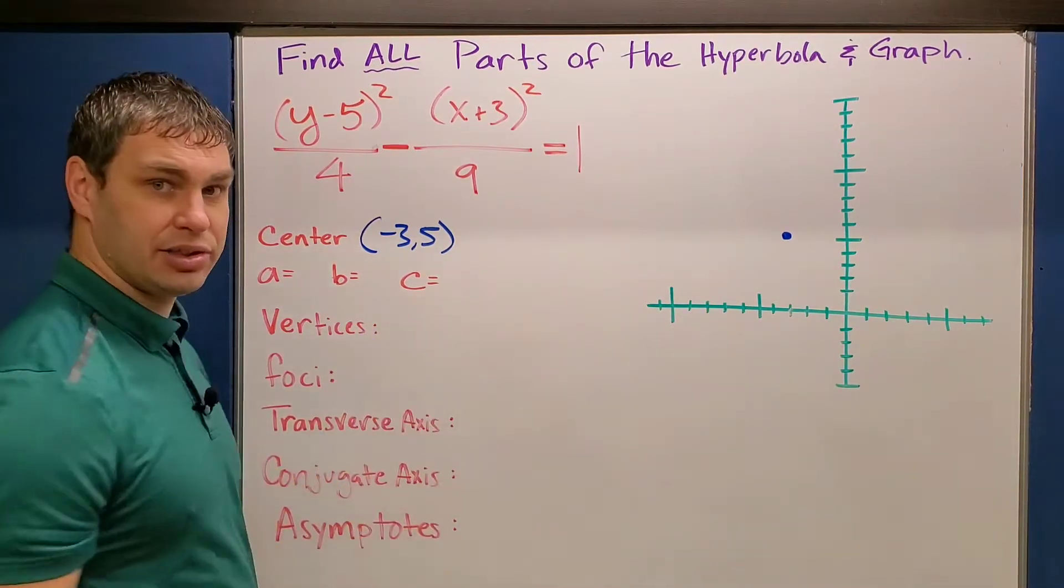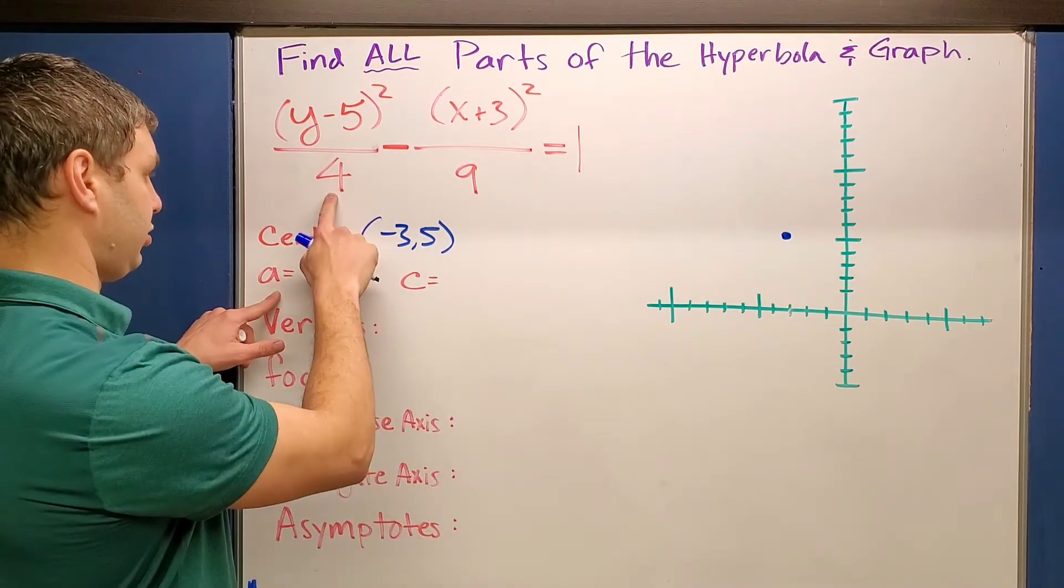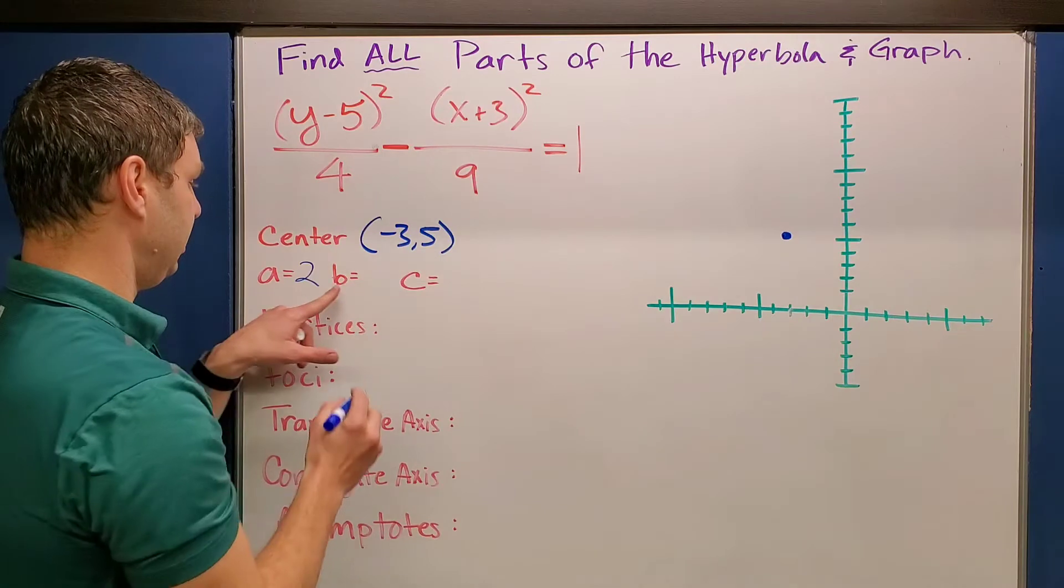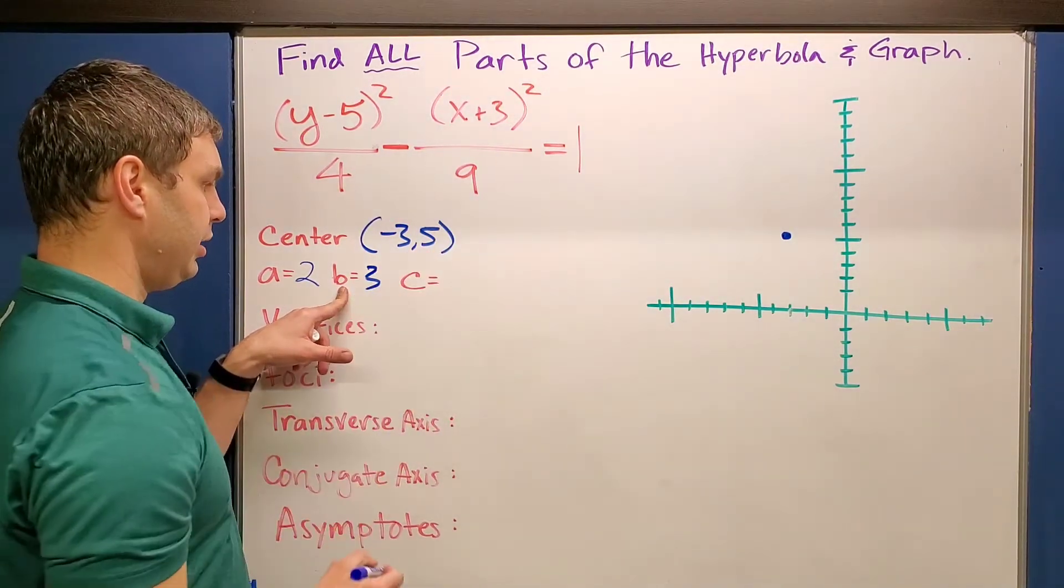Then the a, b, and c values for this one, the a and b are pretty easy to find. It's just the square roots of this first number under here. So this is going to be 2. The b is going to be the square root of this one or 3.